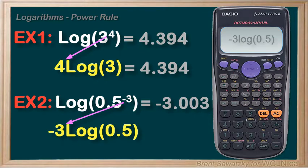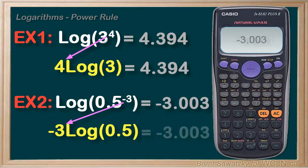If we plug this into our calculator, we get negative 3 times log of 0.5. We also get negative 3.003 rounded. Confirmed.